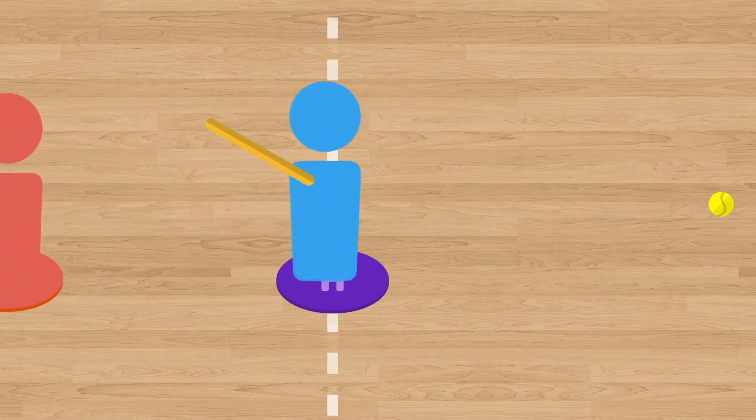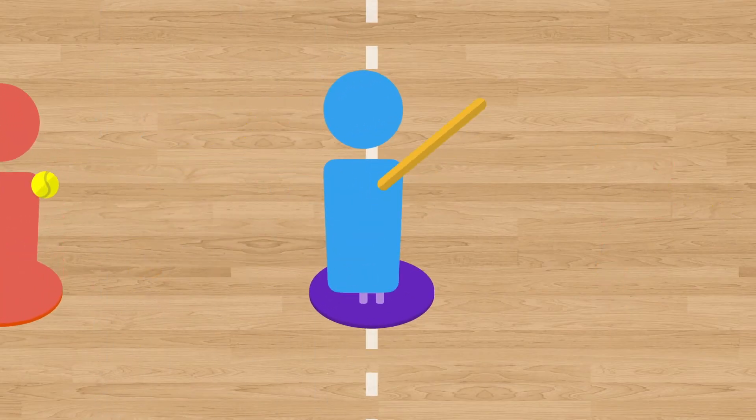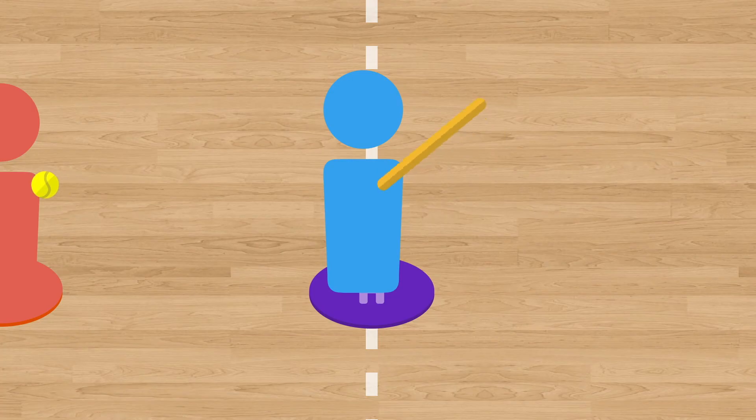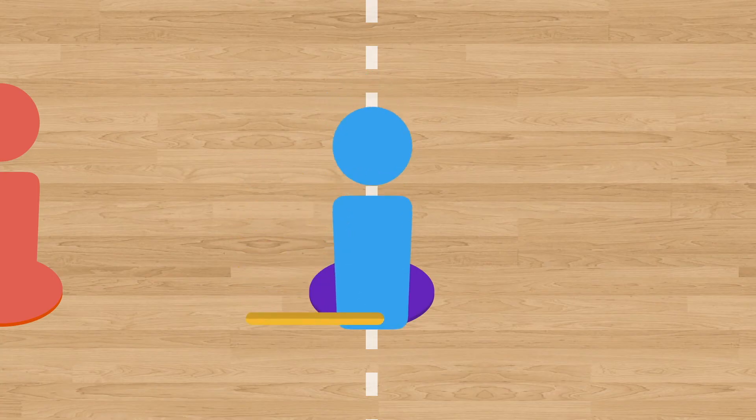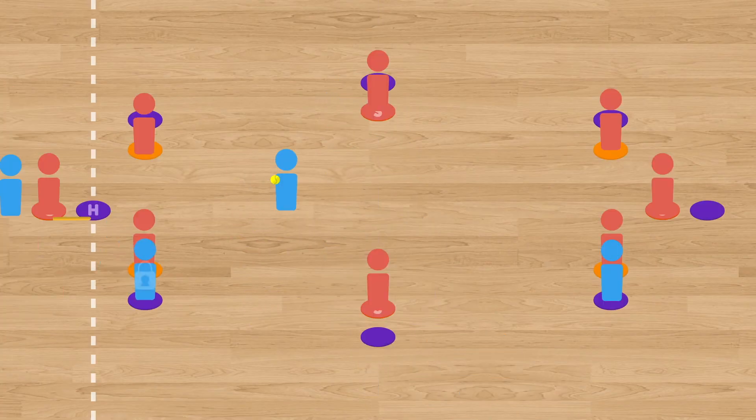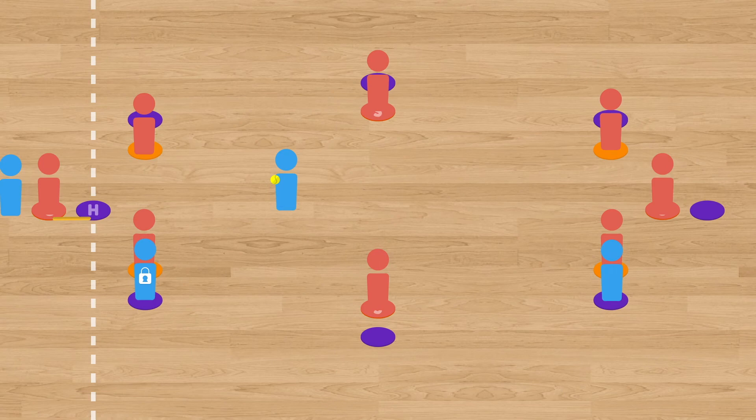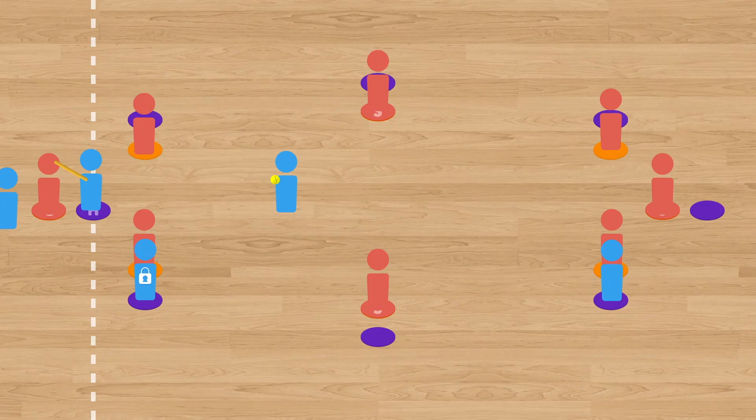Players at bat get 4 chances to attempt to hit the strike ball. If they fail to hit the ball within those 4 attempts, then they simply put down the bat and automatically make their way to first base. However, once they are at first base they are locked there. And what that means is that the next time a player goes up to bat and strikes the ball, the player who is locked at the base is not allowed to run. They have to wait one whole turn at that base before they become unlocked.